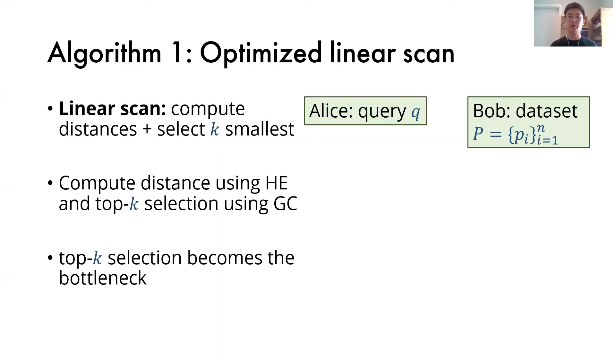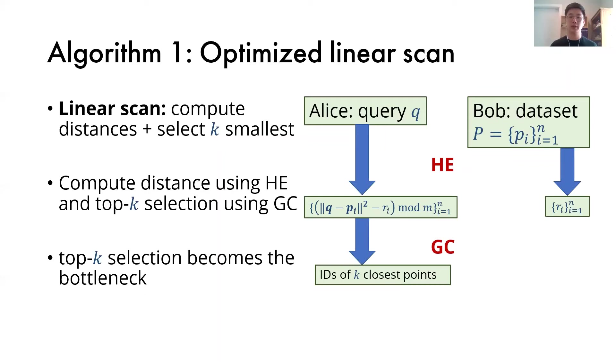Here's an illustration of the protocol flow. First, we will use homomorphic encryption to compute secret shares of the distances between the query point and all points in the database, and then we will use gobble circuit to select the k-closest points and output their IDs.